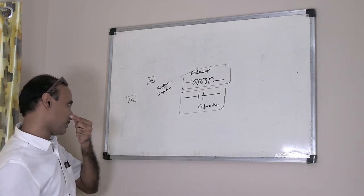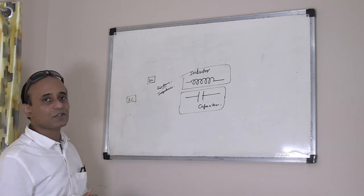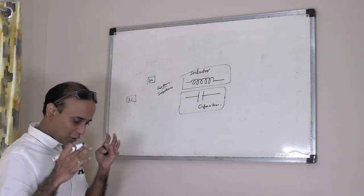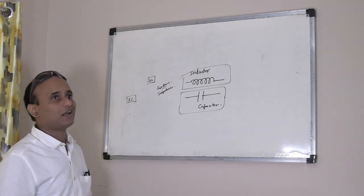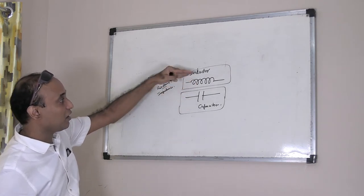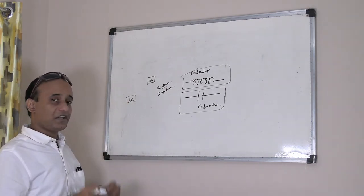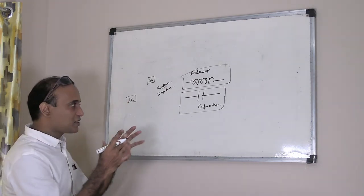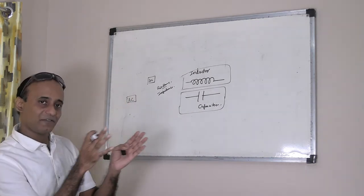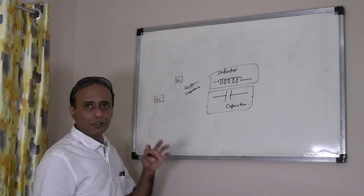An inductor offers high impedance to AC components, and a capacitor offers low impedance to AC components. Using a combination of these two, we can design circuits using which we can filter out certain AC components and let in certain other AC components.